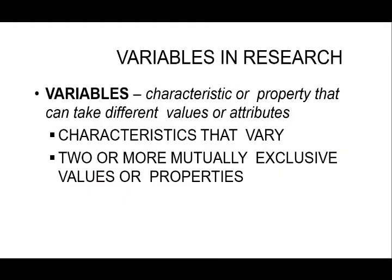So, how do we define variables? Variables are a characteristic or property that can take different values or attributes. For example, there is the word 'age' — that's the data. It can take several properties or attributes such as 69, 24, or 36. Those are the values associated with age, and we call them variables.